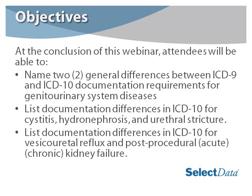At the conclusion of this webinar, attendees will be able to name two general differences between ICD-9 and ICD-10 documentation requirements for genitourinary system diseases. We'll be able to list documentation differences in ICD-10 for cystitis, hydronephrosis, and urethral strictures. And we'll be able to list documentation differences in ICD-10 for vesico-ureteral reflux and post-procedural, either acute or chronic, kidney failure.